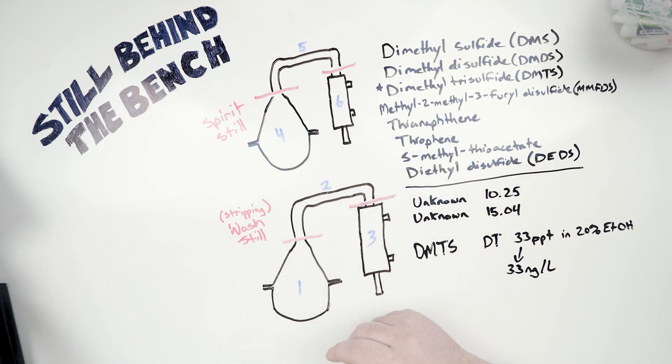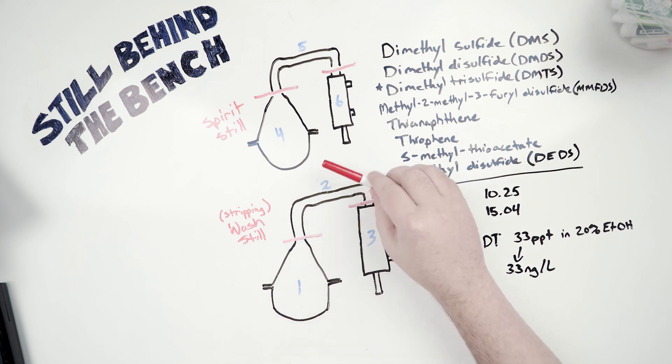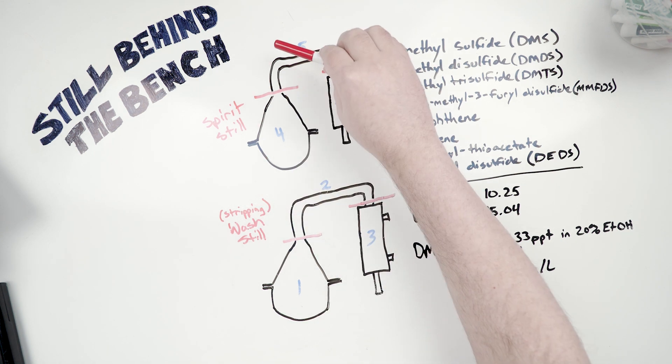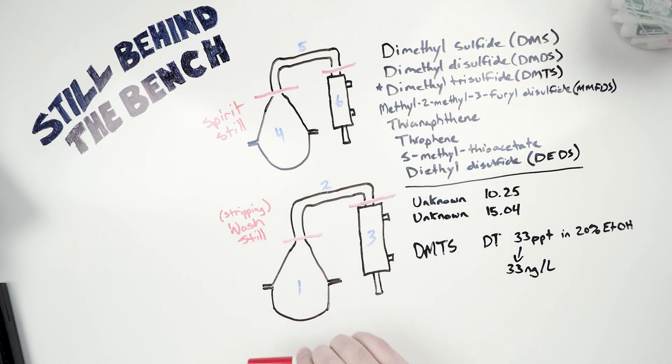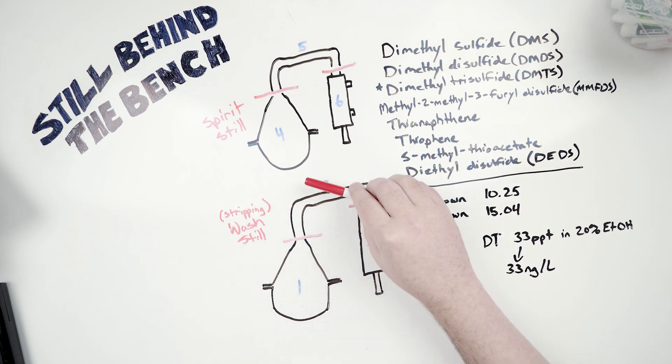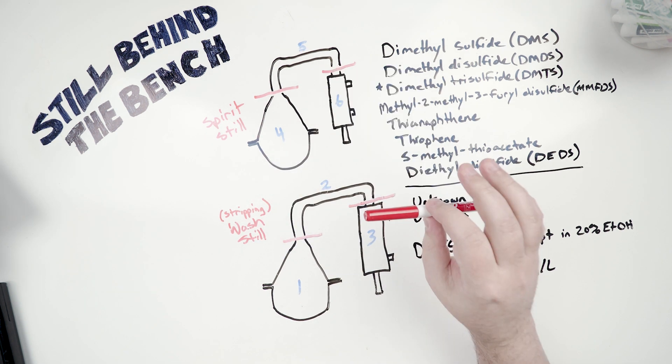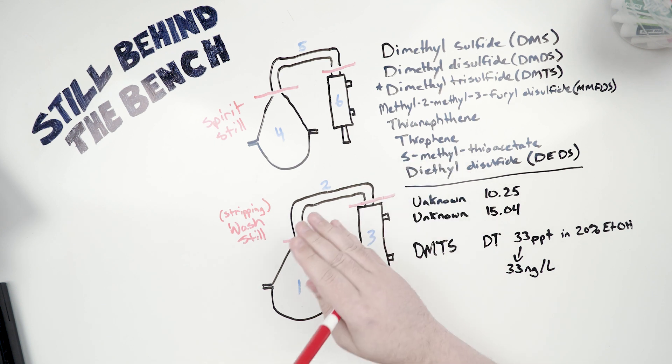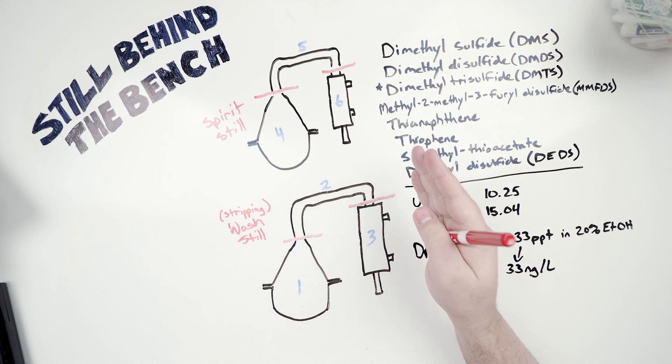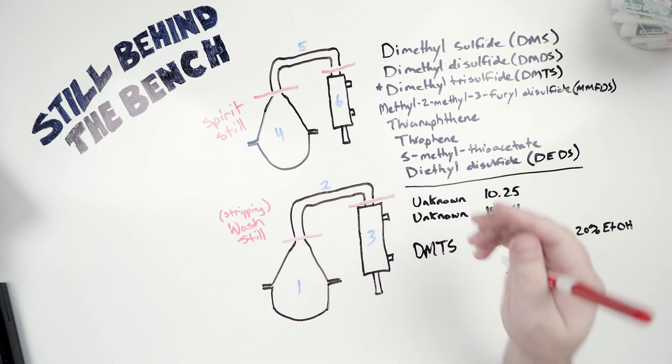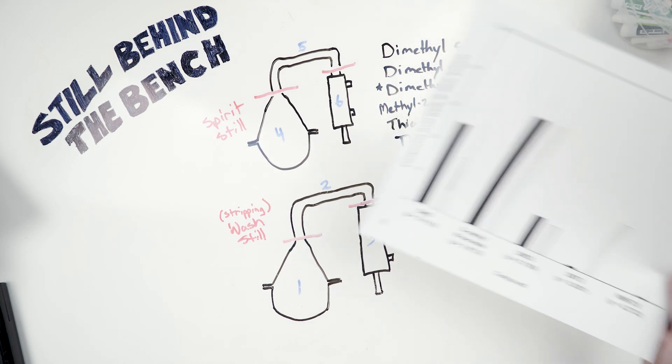They initially ran two control experiments, so all stainless steel wash still, all stainless steel spirit still, and then they did an all copper wash still, and all copper spirit still. They then took that distillate over to their professional sensory panel at the Scotch Research Institute, and they also tabulated all the data, and they came up with this.